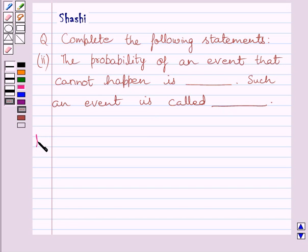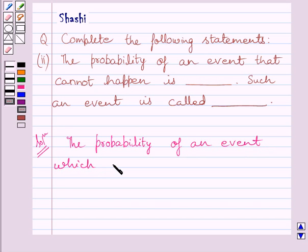Let us now start with the solution. First of all, let us understand that the probability of an event which is impossible to occur is zero. And such an event is called impossible event.